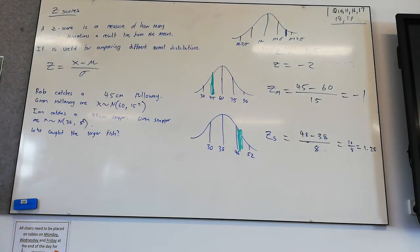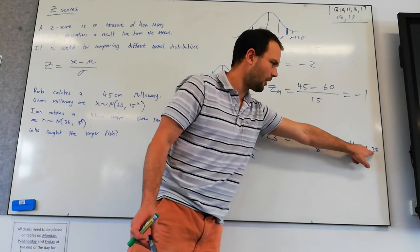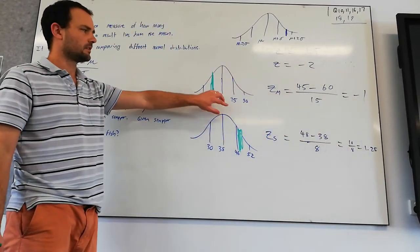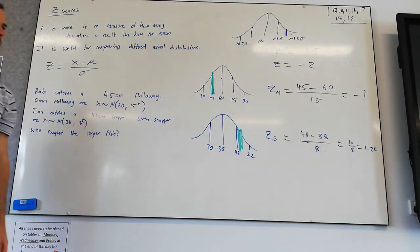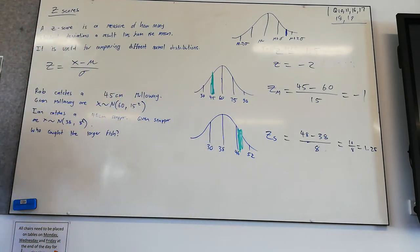So that's 1.25 standard deviations above the mean. So his is not only a larger fish, but it's relatively larger as well. His is in the top 1.25 standard deviations above the mean. This guy has a whole standard deviation below the mean. He's below average. Here, it's a fish that's above average for this species.